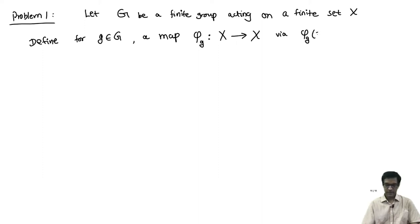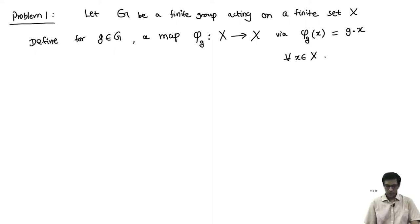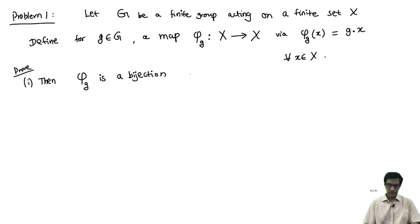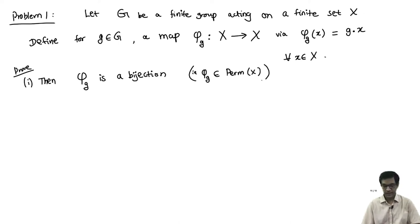φ_G when evaluated on an element x is just the action of G on x, for all x in X. Now we need to prove the following: first, that this map φ_G is in fact a bijection — φ_G belongs to Perm(X), the set of all permutations of the finite set X, which is itself a group under composition.